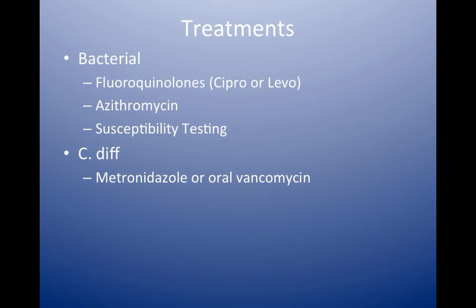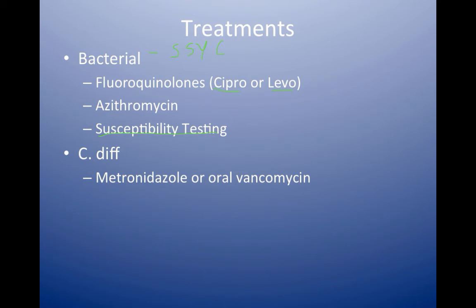Treatment depends on the etiology. For bacterial cases — Salmonella, Shigella, Yersinia, or Campylobacter — the treatment of choice is a fluoroquinolone. Earlier generation fluoroquinolones such as Cipro or Levofloxacin are preferred over Moxifloxacin because they have more gram-negative activity. An alternative would be azithromycin. Most enteric pathogens are sensitive to fluoroquinolones, but it's still good to send cultures for susceptibility testing, as we have seen some resistance among Salmonella and Shigella. Modify treatment based on susceptibility results.